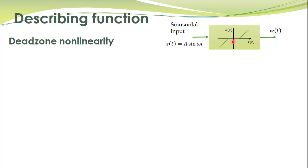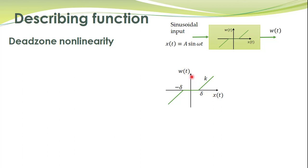Actuators have this dead zone non-linearity — up to a certain range of inputs the actuator does not respond, and if the input exceeds that particular value then they have a linear behavior. That dead zone non-linearity is described here. This delta is the width of the dead zone. The horizontal axis is the input to the non-linearity and the vertical axis is the output of the non-linearity.